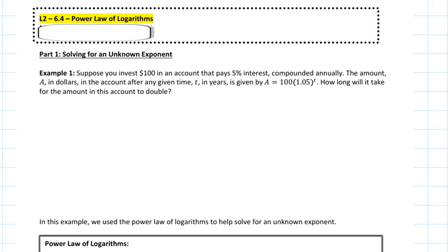Let's start with example number one. Suppose you invest $100 in an account that pays 5% interest compounded annually. The amount A in dollars in the account after any given time t in years is given by A equals 100 times 1.05 to the power of t. How long will it take for the amount in this account to double?